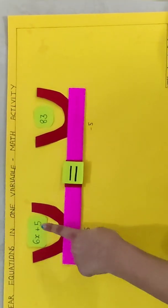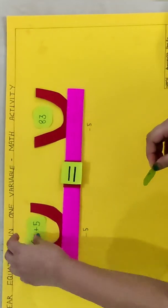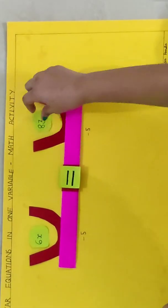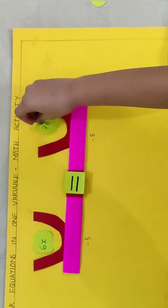So if we will subtract 5 from this side, we will get the answer as 6x and if we will subtract 5 from this side, we will get the answer as 78.